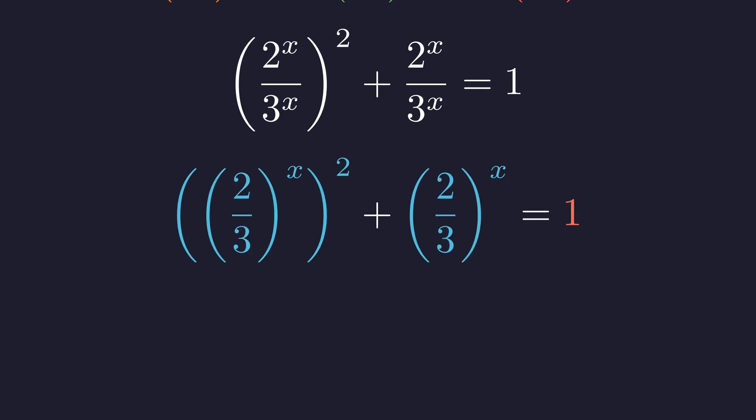Let's pause and appreciate what's happened. Through algebraic manipulation, we've transformed our complex exponential equation with different bases into what's essentially a quadratic equation. The original complexity is now hidden in a single repeated term.